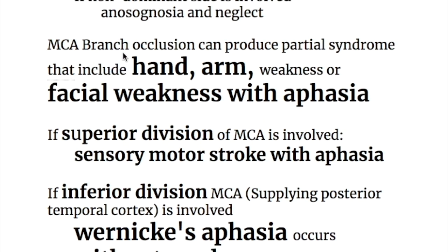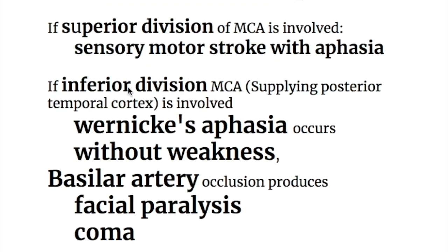Middle cerebral artery branch occlusion causes a partial syndrome including hand and arm weakness or facial weakness with aphasia. If the superior division of the middle cerebral artery is involved, it causes sensory-motor stroke with aphasia. If the inferior division is involved, which supplies the posterior temporal cortex, it causes Wernicke's aphasia without weakness.